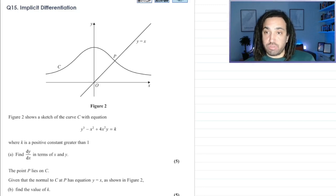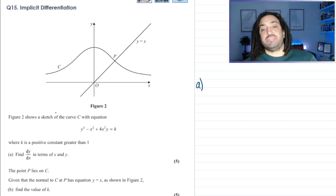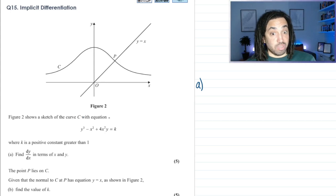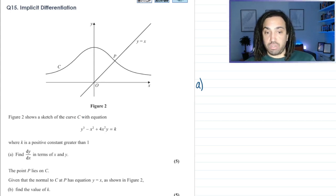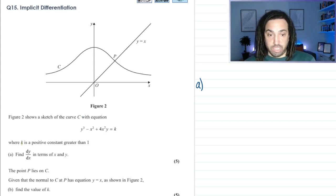Okay, a really lovely question here. These implicit differentiation questions do tend to be very nice. So we've got a function, got the sketch of it as well, and it says k is a positive constant greater than one. Okay, that's useful to know. Find dy/dx in terms of x and y. Beautiful.